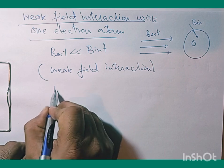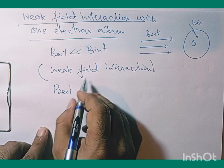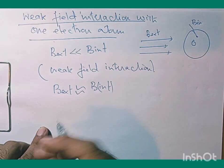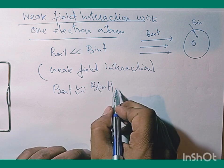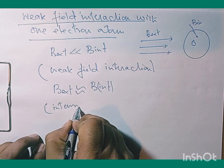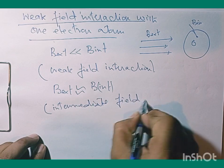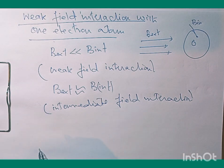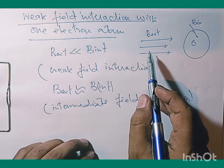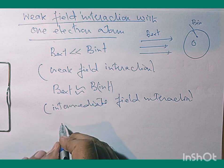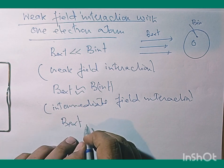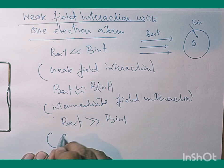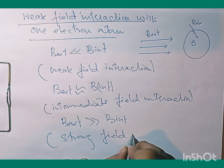If the magnitude of the external magnetic field is of the order of the internal magnetic field — which results from spin-orbit interaction — we call this intermediate field interaction. And if the magnitude of the external field is very much greater than the internal field, this is called strong field interaction.